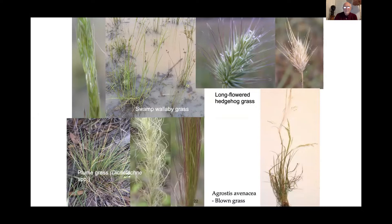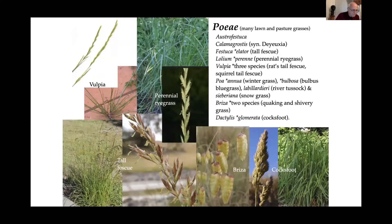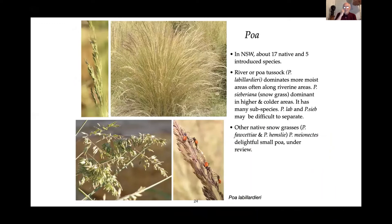One thing I'm not talking about is the nutritional value of some of these grasses, which is obviously another important thing to learn about. Then the Pooideae family, which consists of a lot of introduced as well as native grasses — things like vulpia, perennial rye, tall fescue, breeza, and cocksfoot. Someone was asking about cocksfoot before. The native grasses here include river tussock or snow grasses, and there are a number of species within all these genera.